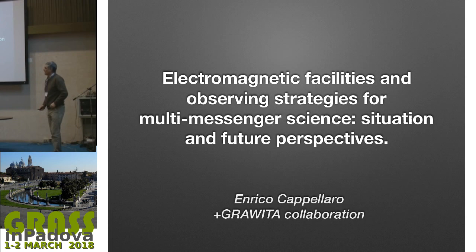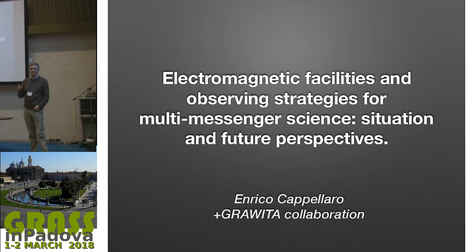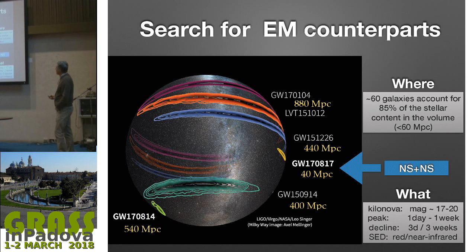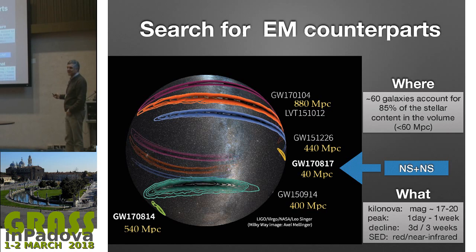I will try to give you some lessons learned from the event—the only event we have had so far of electromagnetic follow-up of a gravitational wave event. I start from the sky localization map of the triggered event. For optical people or follow-up purposes, it is easy to find these objects if you know where to search and what to search.